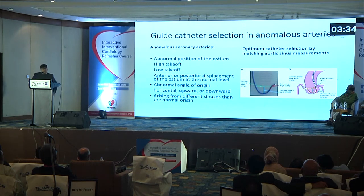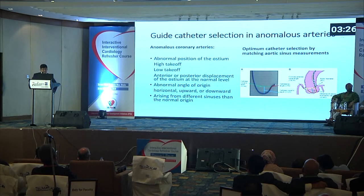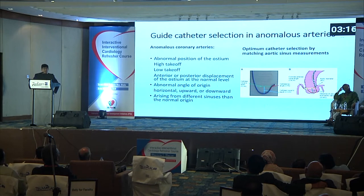Guide catheter selection for anomalous coronary arteries: anomalous coronary arteries can have an abnormal position of the ostium — it may be high take-off, low take-off, anterior or posterior displacement, or ostium at the normal level with abnormal angle of origin, which may be horizontal, upward, or downward, and arising from different sinuses.